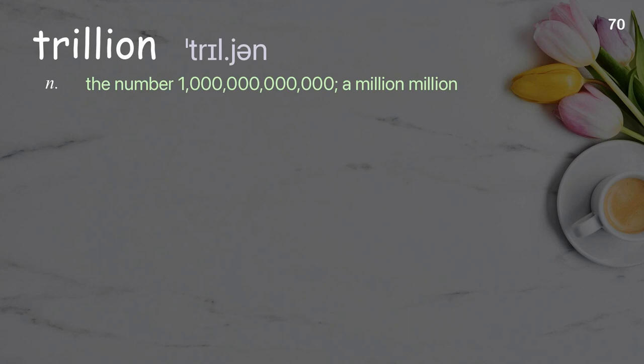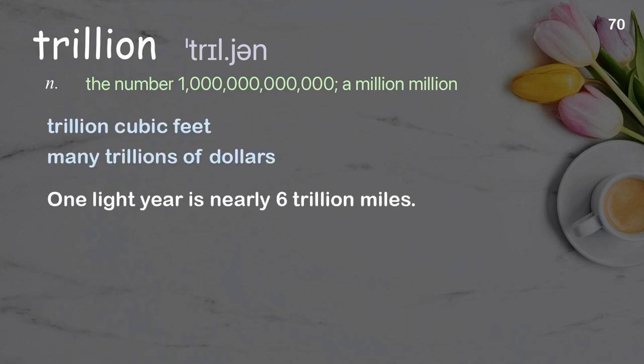Trillion: the number 1 trillion, a million million. Examples: trillion cubic feet; many trillions of dollars. One light year is nearly 6 trillion miles.